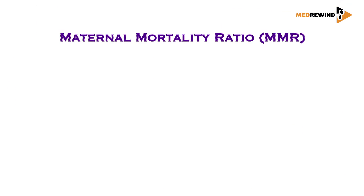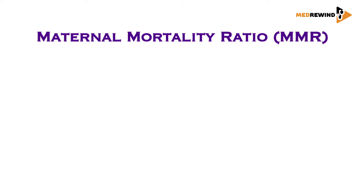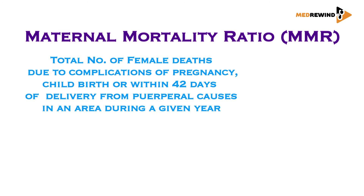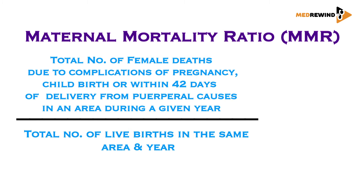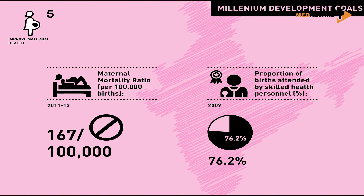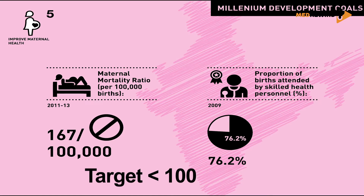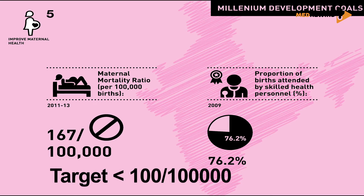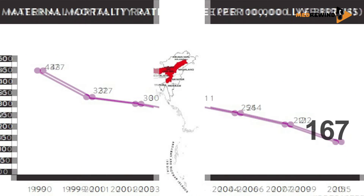Coming to mortality indicators, one important indicator is the Maternal Mortality Ratio, which means the total number of maternal deaths happening per one lakh live births in a given area at a given period of time. The target is that it should be less than 100 maternal deaths per one lakh live births, and currently we have brought it down to a level of just 167.